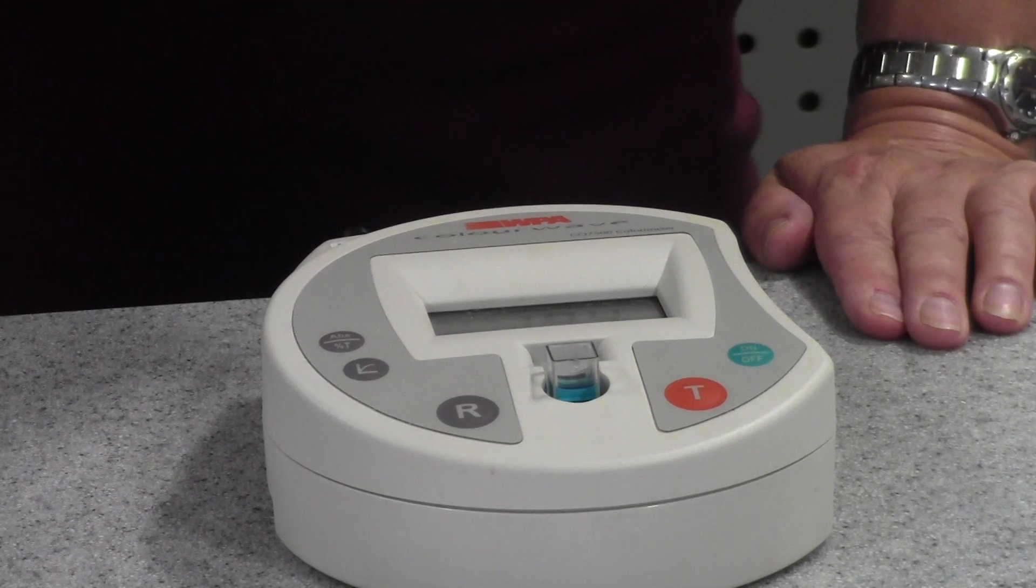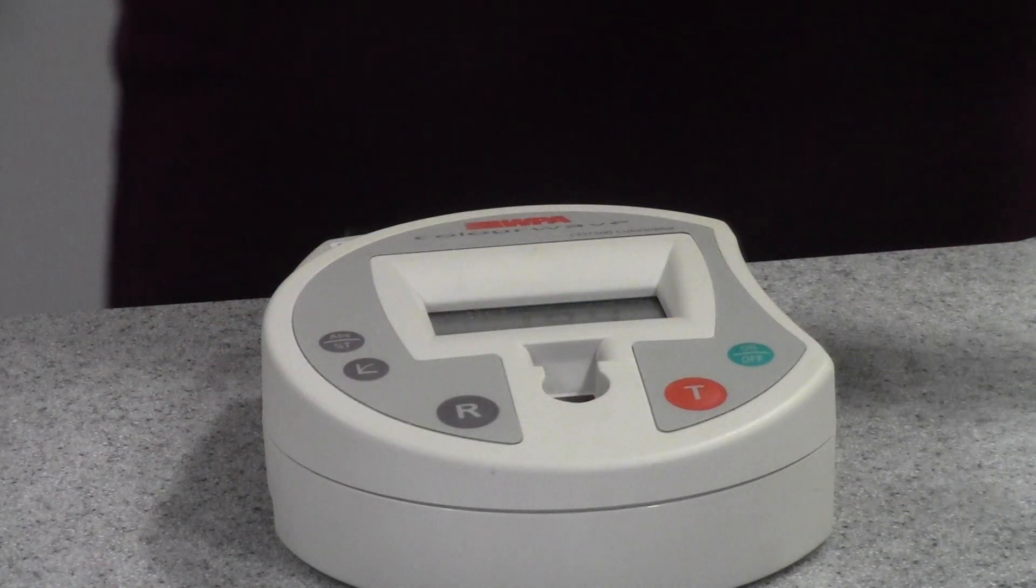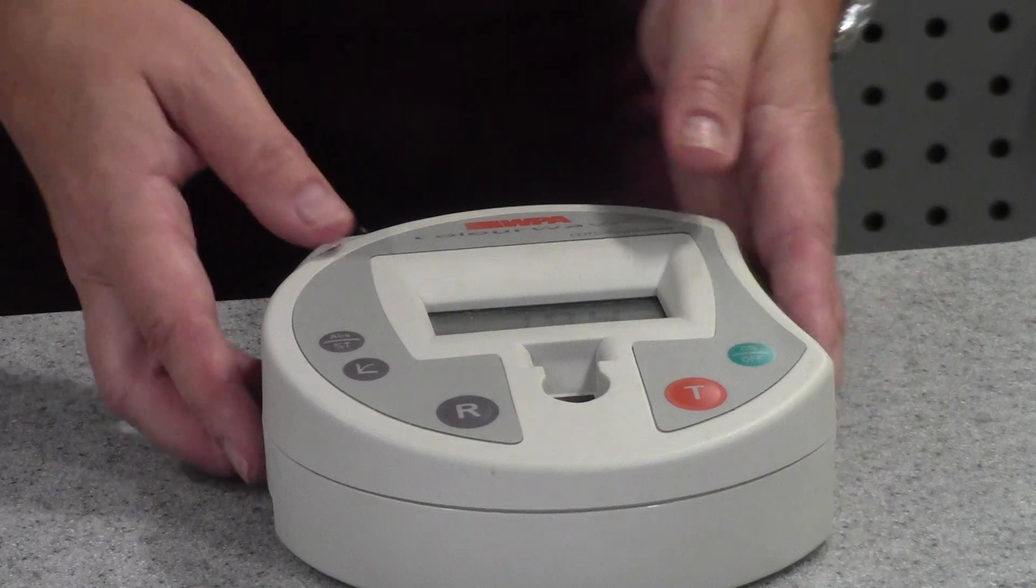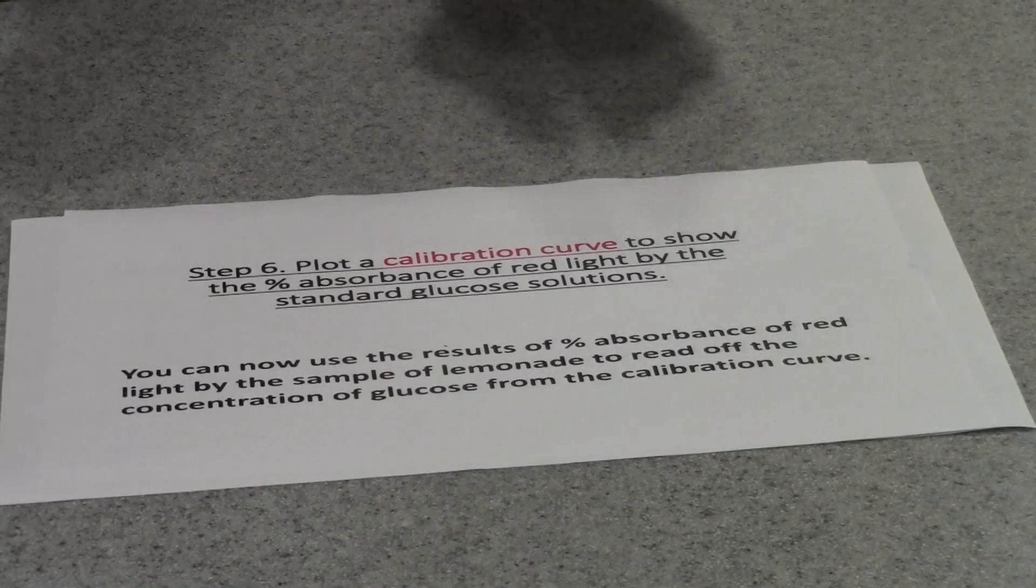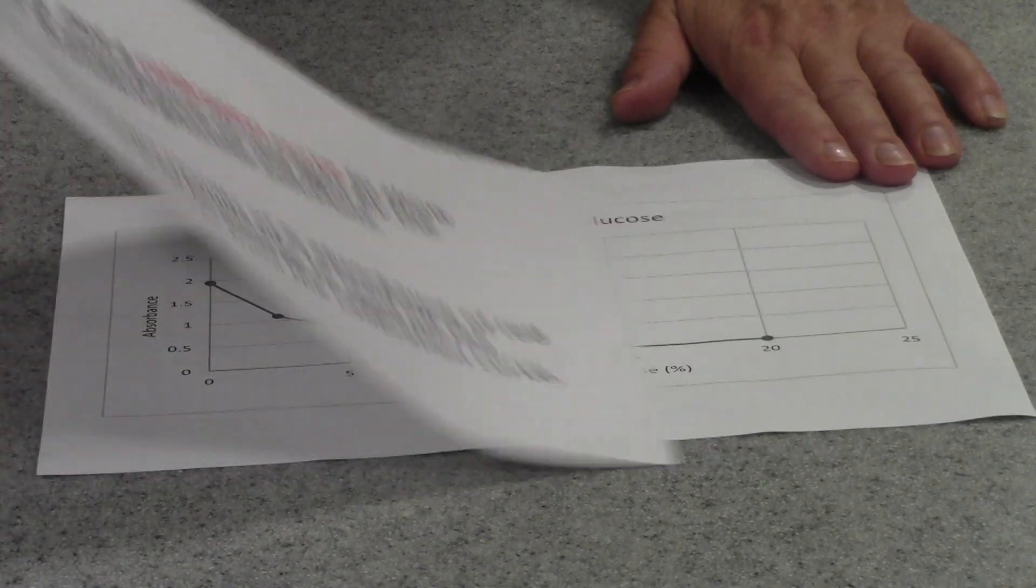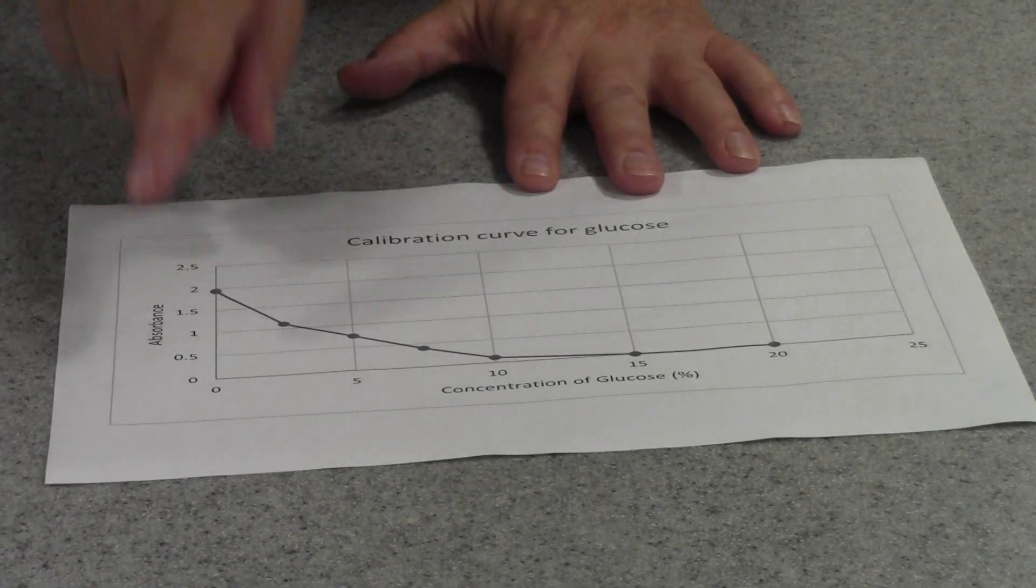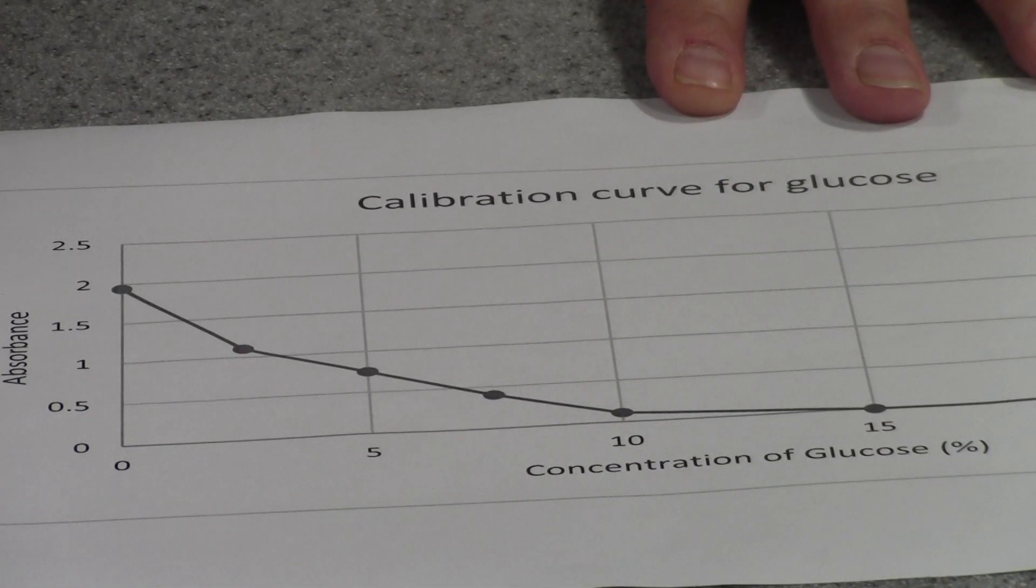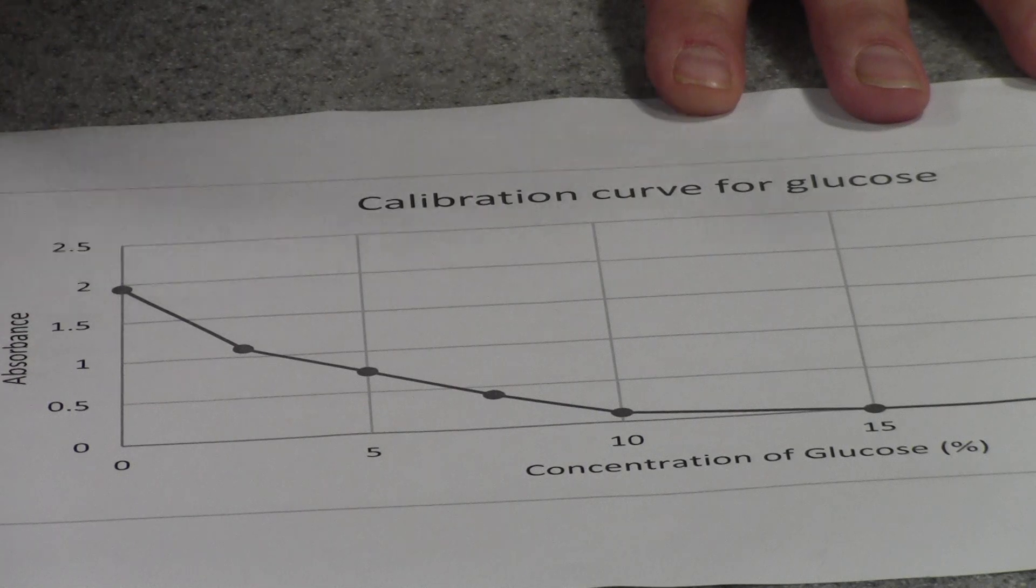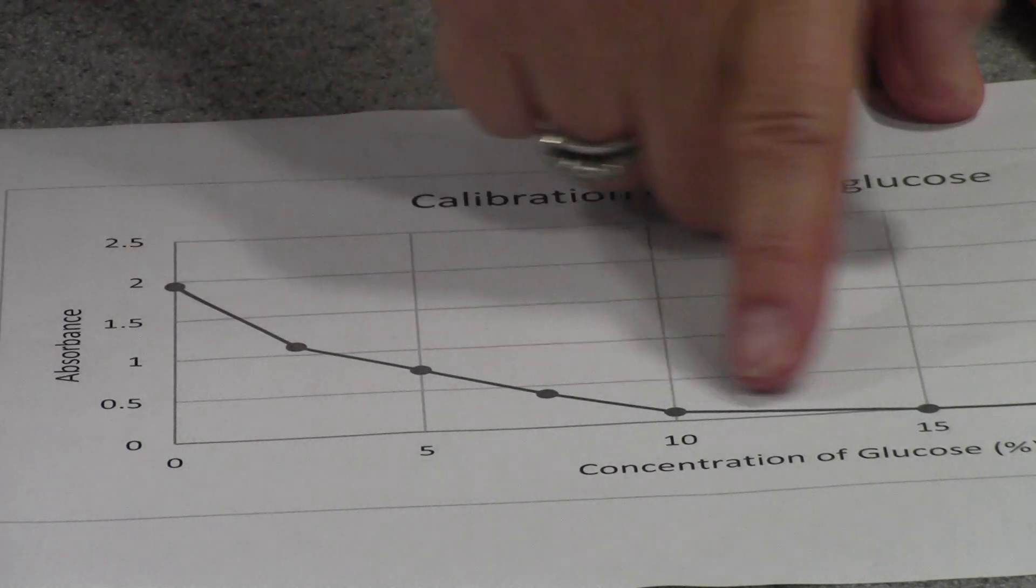I'm now going to repeat this procedure for all of the other filtrates, and when I've done that, I'm going to use the results to plot what is known as a calibration curve. So here I have a calibration curve that I produced earlier. Notice you've got concentration of glucose—the standard glucose concentrations—across the x-axis, and up here you've got the percentage absorption of red light, or absorbance, and we've plotted this as you can see by joining the points up.